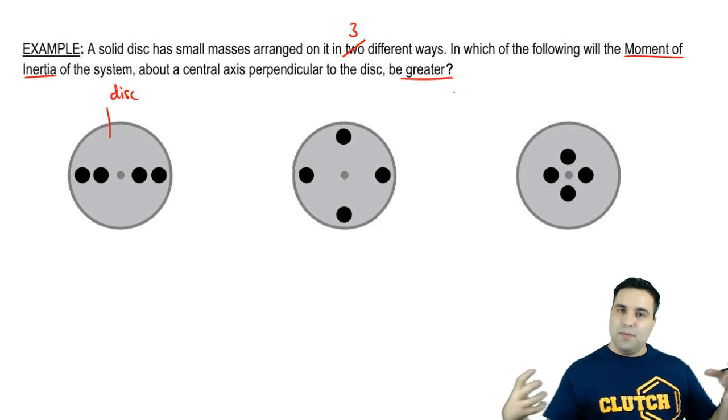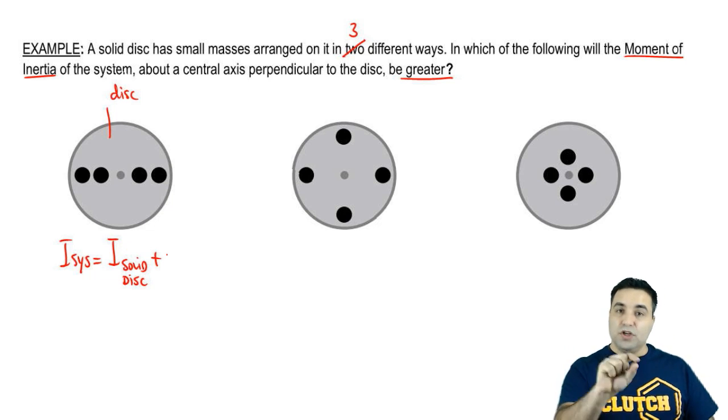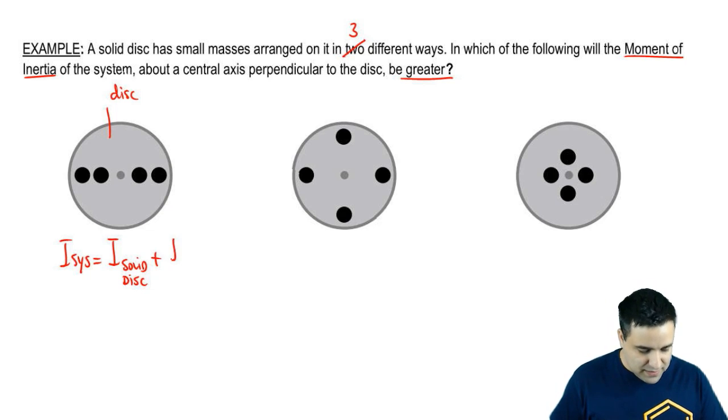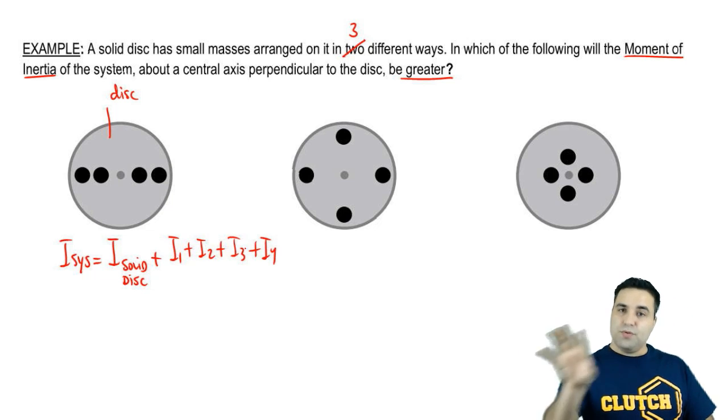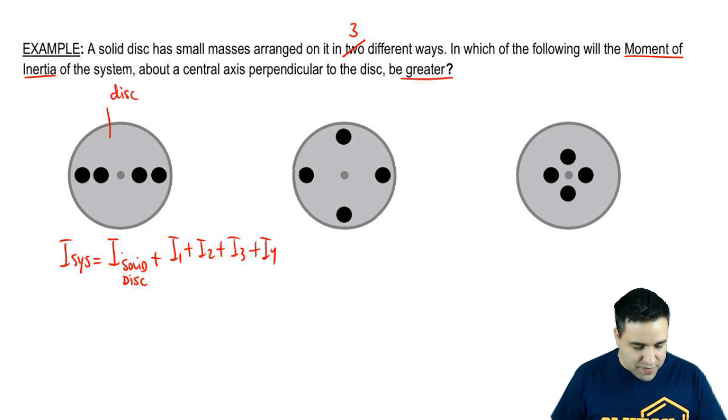Now this is a composite system with a bunch of different masses. So the total moment of inertia of the system would be the moment of inertia of the solid disk, which is a solid cylinder, plus the moment of inertia of the four masses. So something like I₁ plus I₂ plus I₃ plus I₄. Now, these three situations have the same disk with the same mass with the same radius. So for all of them, this is going to be the same. The only thing that will change is this.